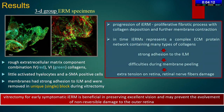In the third group membranes, we found robust extracellular matrix component combinations with type 4 and 6 collagens, few activated hyalocytes, and alpha-SM actin-positive cells. These membranes had strong adhesion to the ILM and were also removed in a unique block during vitrectomy. We did not observe any Müller cells or astrocytes in this type of membrane.